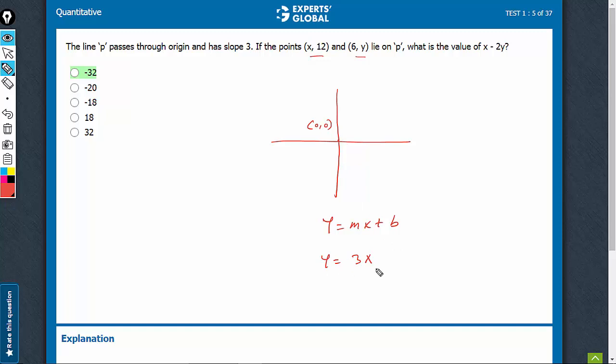The equation of the line is y equals 3x, and now it's given that (x, 12) is passing through it. So we know that 12 equals 3x is going to satisfy this, which gives us the value of x. This tells us that x is equal to 4.